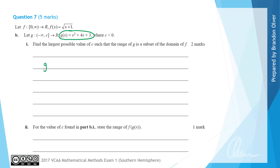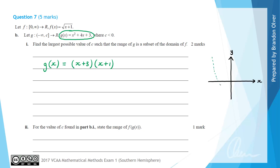We start by looking at the rule g of x, which is x squared plus 4x plus 3. We factorise this by looking for factors of 3 that add up to 4, which means we can write this as (x + 3)(x + 1). The reason we needed to do that was to sketch a graph of g of x. Without the domain restriction it is a parabola with x-intercepts at negative 3 and negative 1 by the null factor law.